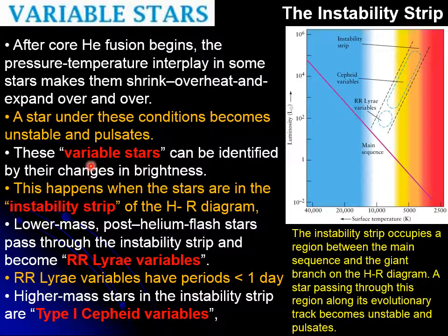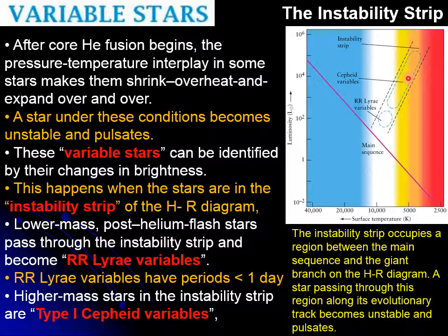There are basically two categories of variable stars: the Cepheids and the RR Lyrae. They vary in the periodicity of their pulses — how fast they oscillate. For this pulsation to occur, the star must meet certain conditions of size and temperature, which are found only in the region known as the instability strip.